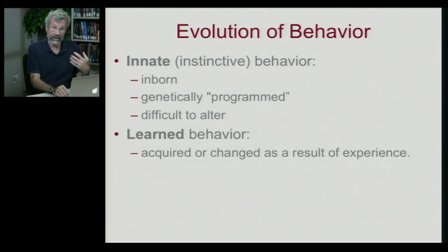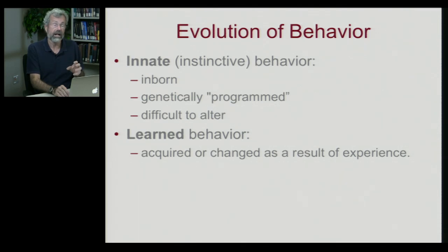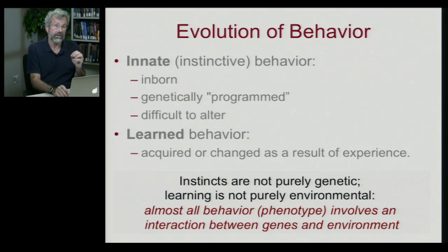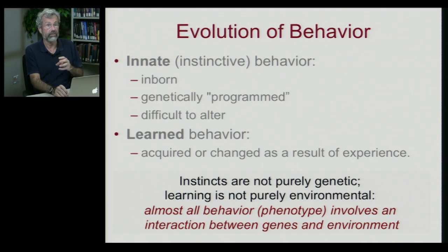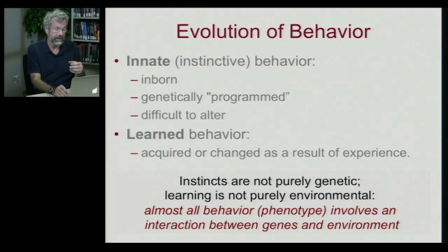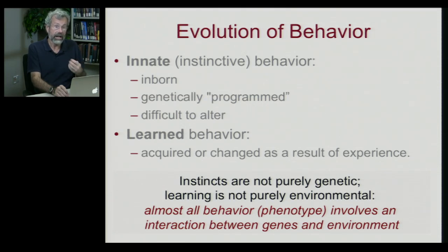So while we talk about a distinction between learned and innate behavior, it turns out there is an interaction between the two. Instincts in higher mammals are never purely genetic, and learning is never purely environmental. We are predisposed to learn some things more than others, and almost all behaviors involve an interaction between genes and environment.